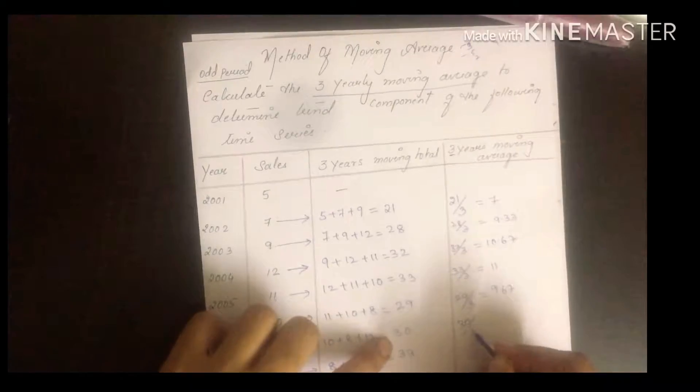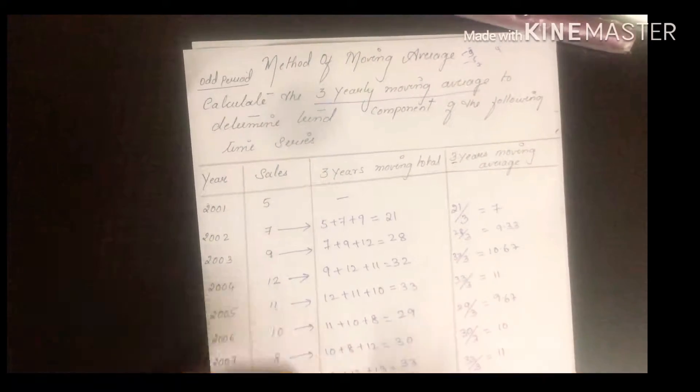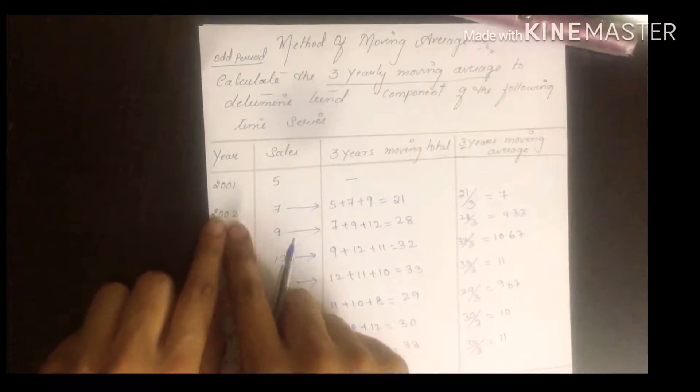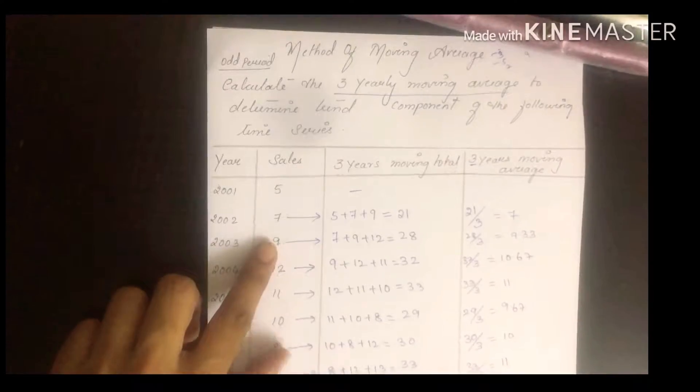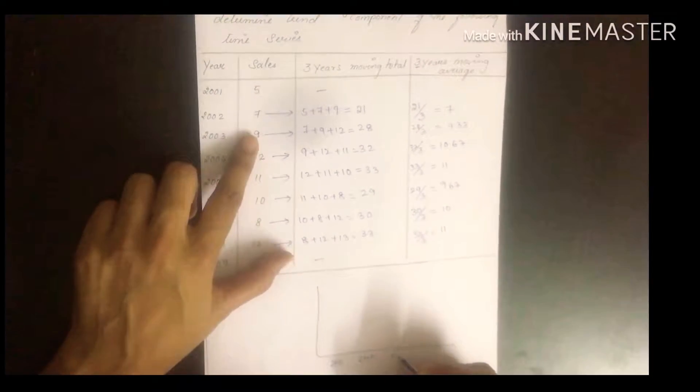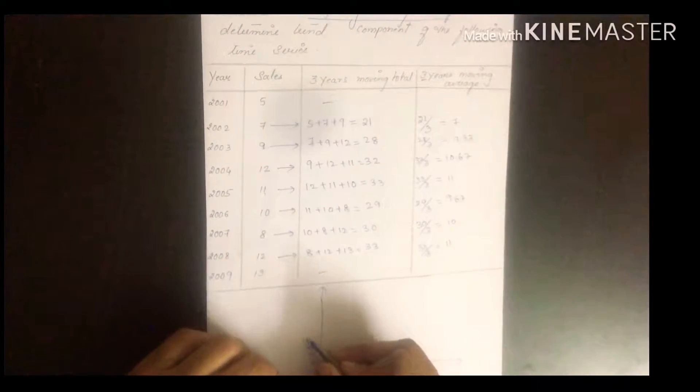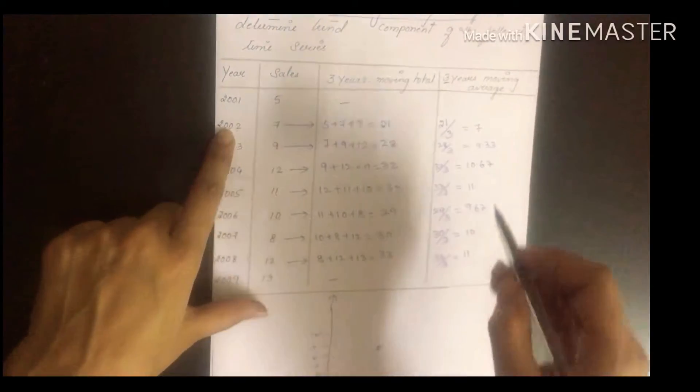29 divided by 3 equals 9.67. 30 divided by 3 equals 10. 33 divided by 3 is 11. Here they haven't asked you to plot a graph. If graph is asked, you take this 7 value for 2002 - these become your trend values. If you need to plot a graph with 2001, 2002, 2003, you know how to do it. You take scale 2, 4, 6, 8, 10, 12 likewise. So 2002 is 7. This is 3 years moving average.